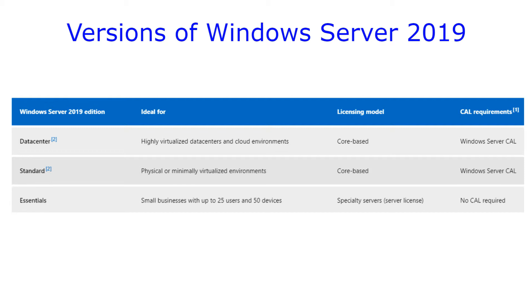Data Center gives many additional features and licenses that you don't get with the other versions. Standard Edition is the most common, and that's what you're going to find running in pretty much most medium to large enterprise businesses. This is also licensed per core of the hardware you're installing it on, and gives you all of the typical features that you need. Lastly, there's Essentials, and this is mainly for small businesses with a small footprint, and it's about half the price of the Standard Edition.